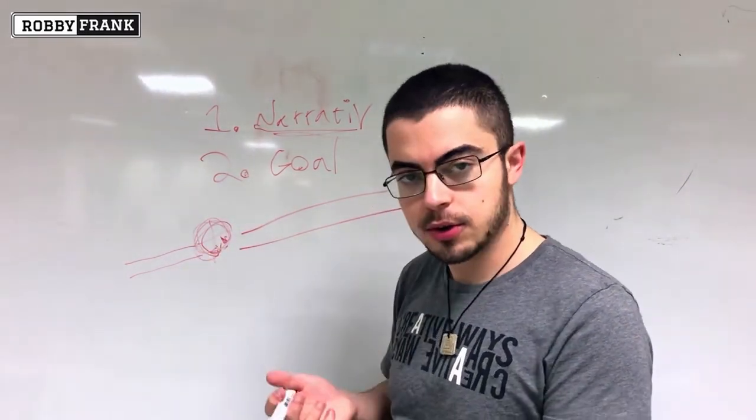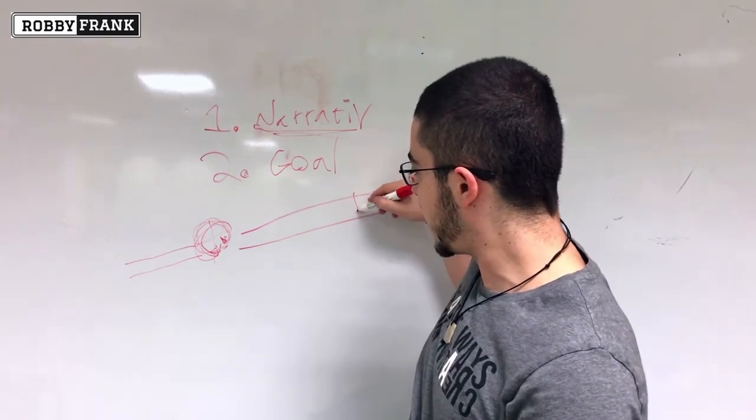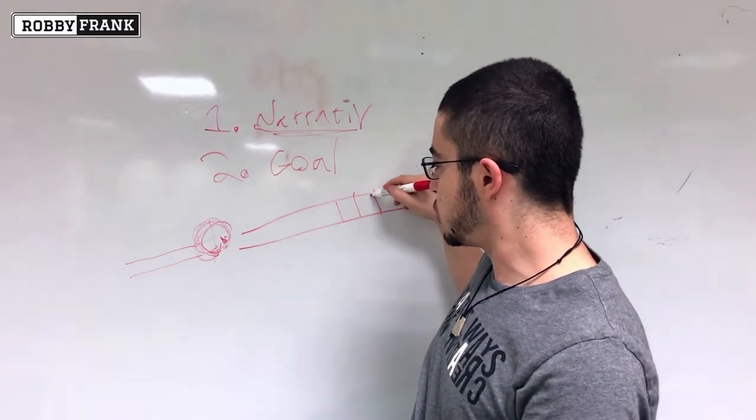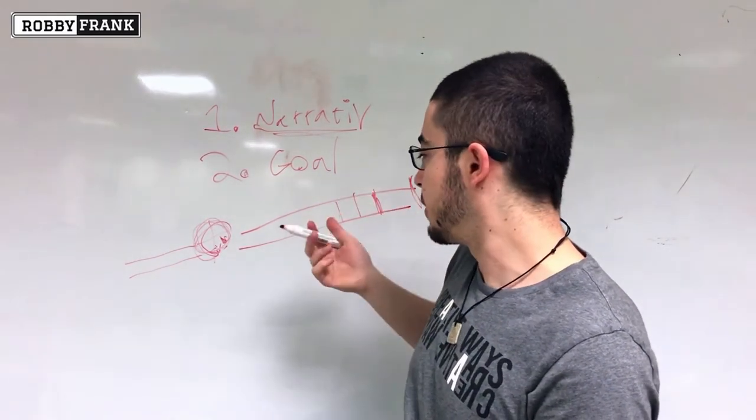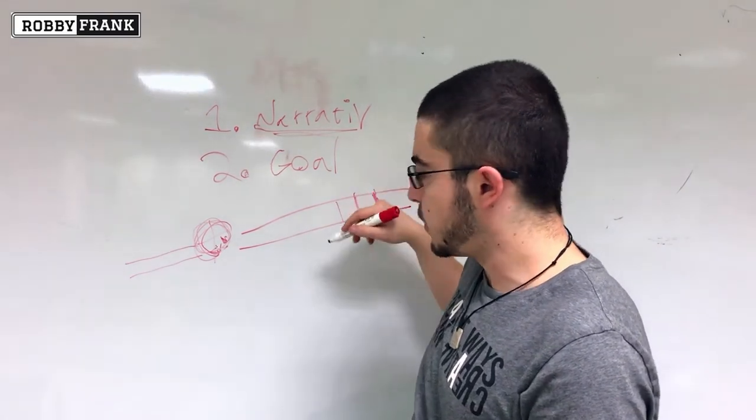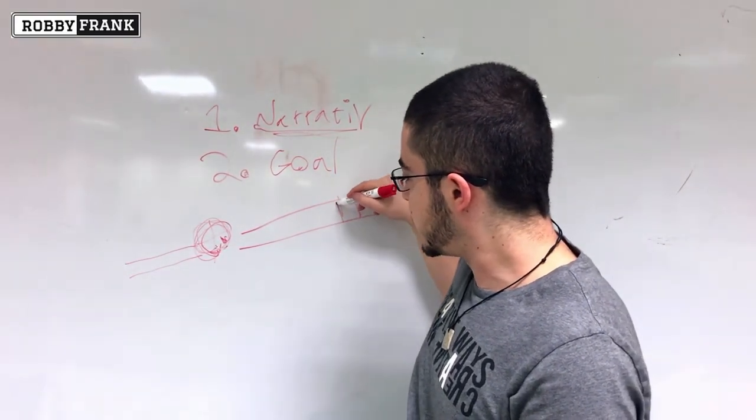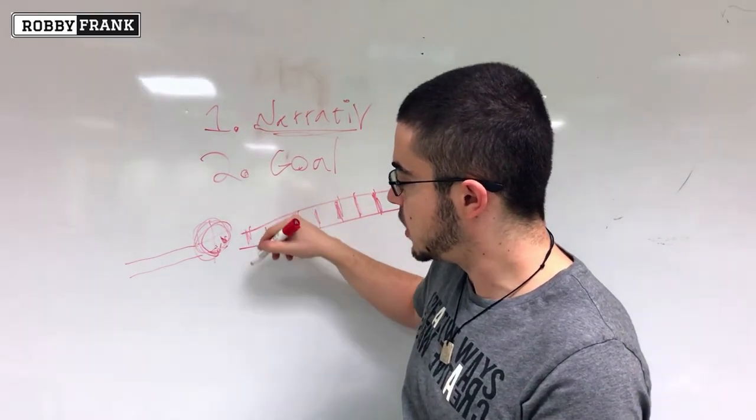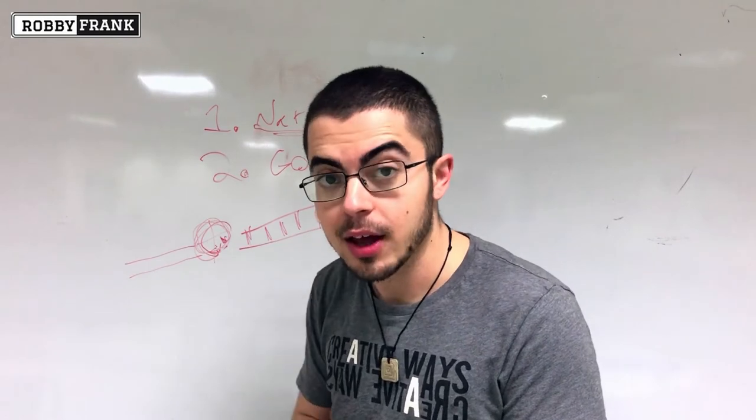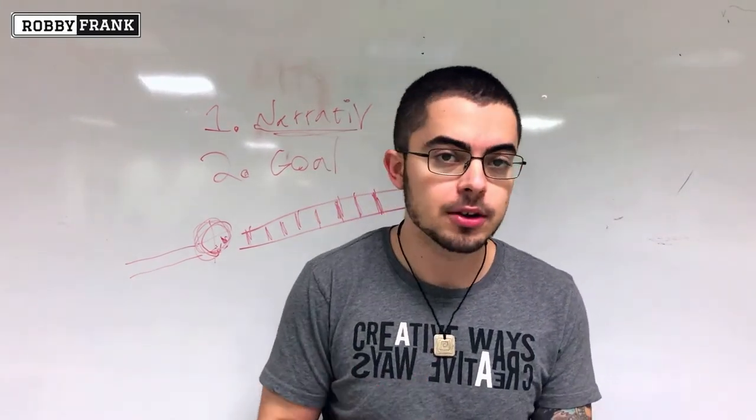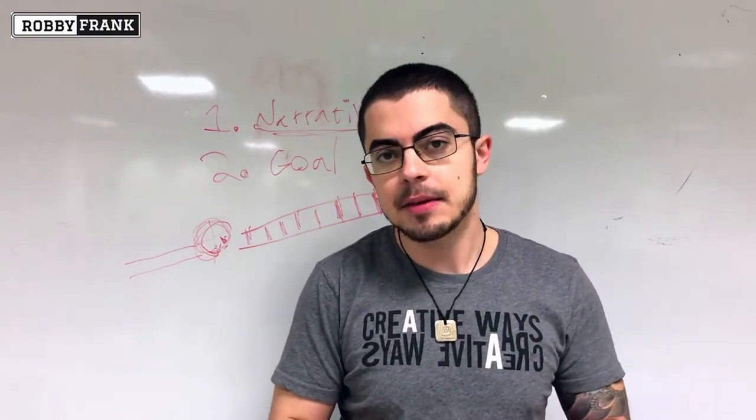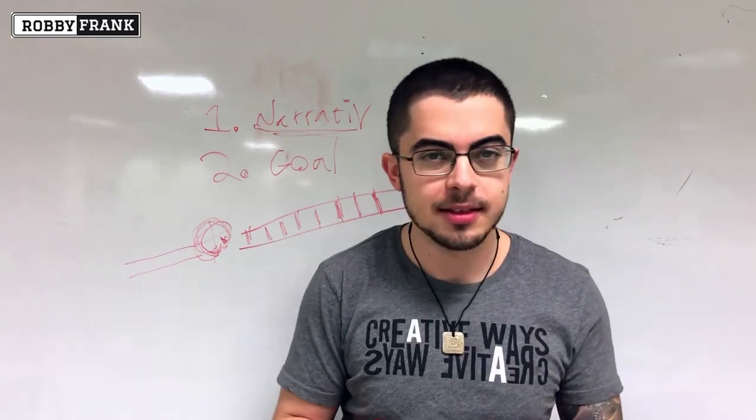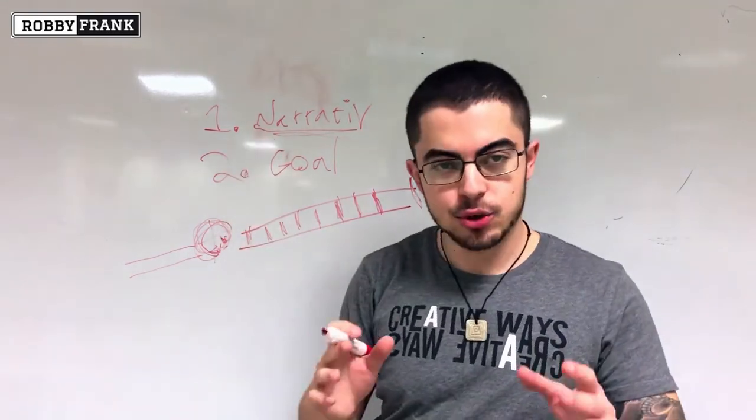And all you're doing is setting up kind of like the rails with here's a story that promotes the narrative, here's an example that promotes the narrative, here's statistics that promote the narrative. And you just keep building it through repetition and through different examples until you hit your goal. And that's how you write really good content very easily even if you're like me and you don't really like to write.